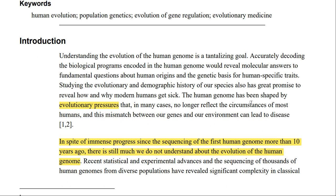As the article says, studying the evolutionary and demographic history of a species has great promise to reveal how and why modern humans get sick. The human genome has been shaped by evolutionary pressures, and in many cases those pressures no longer reflect the circumstances of most humans today. This mismatch between our genes and our environment can also lead to disease — attributing the cause of changes in the human genome to specific health outcomes is partly explained by this gene-environment mismatch.